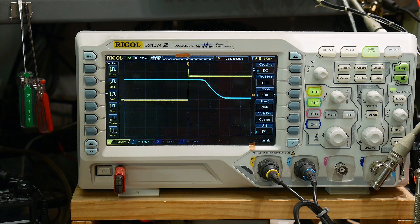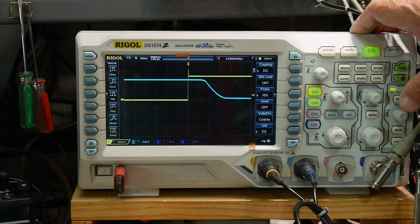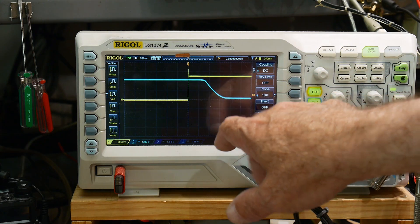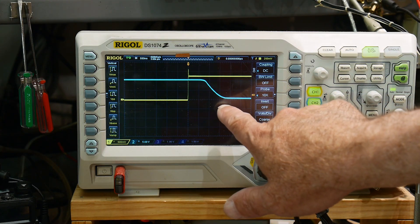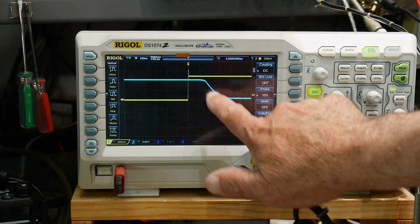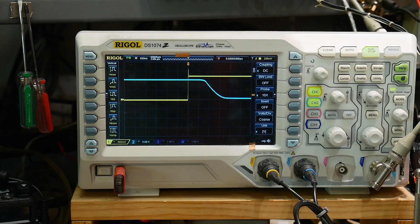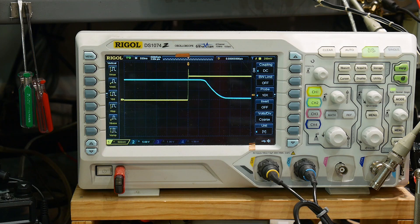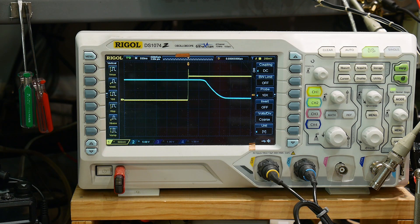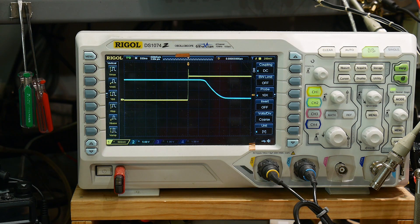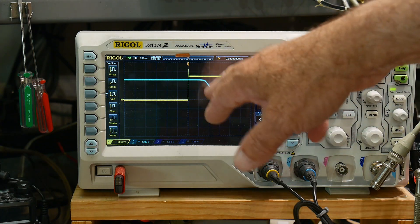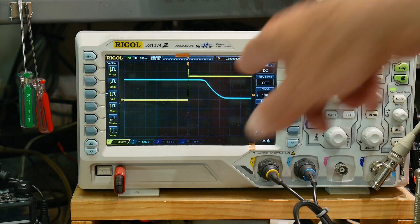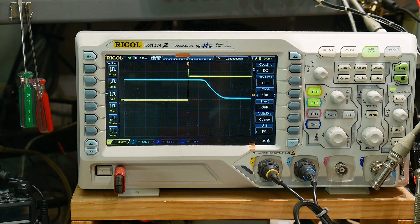And so we could sort of measure things here. So we'll just kind of count. So it's taking about one, two. So it's about one, two, thinking about two divisions and the divisions are 500 nanoseconds. So it's taking about 1000 nanoseconds for it to fall down.